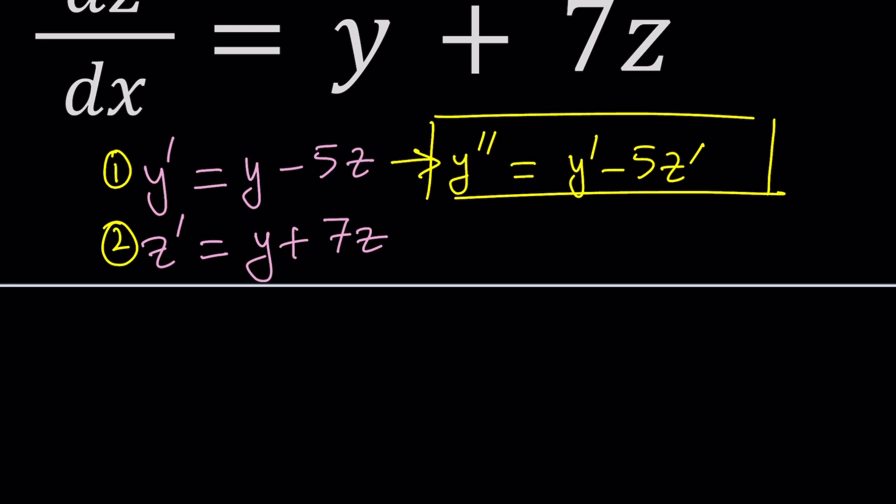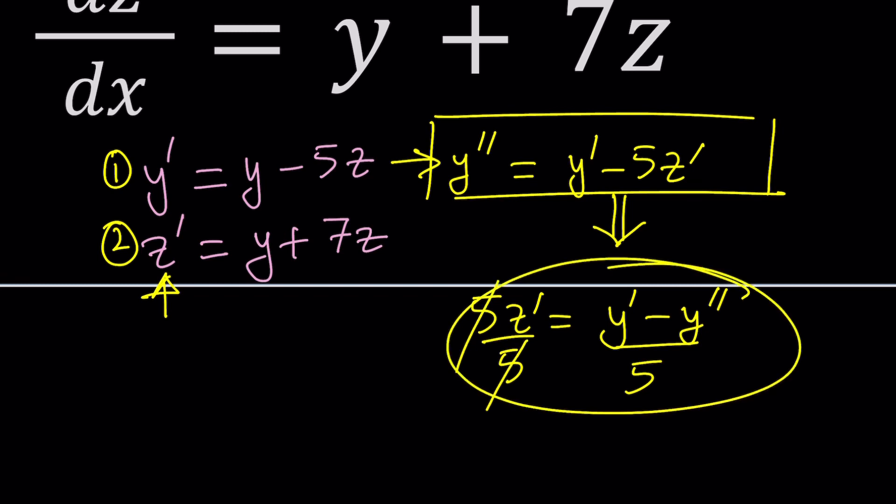For example, what can we replace z prime with? Good question, right? From here, we can solve for z prime. Let's do it. Put the 5z prime on the left and bring the y double prime and subtract it from y prime and divide both sides by 5 and you get z prime. So, z prime can be replaced with that, which is y prime minus y double prime divided by 5.